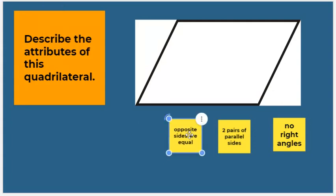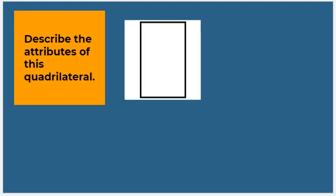So the attributes of this quadrilateral are: no right angles, two pairs of parallel sides, and opposite sides are equal. Let's try with this next shape. What are the attributes of this quadrilateral? Does it have any right angles? Yes, it does — it has four right angles.